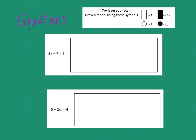Now we're going to draw a couple of different equations to get some practice. This says 3x minus 7 equals 5. I'm going to identify the differences between the variables and the constants. Up here at the top, it says to draw the models using these symbols, so this time we have a key. A positive variable is a rectangle that's not shaded in, and a negative variable is a rectangle that is shaded in.